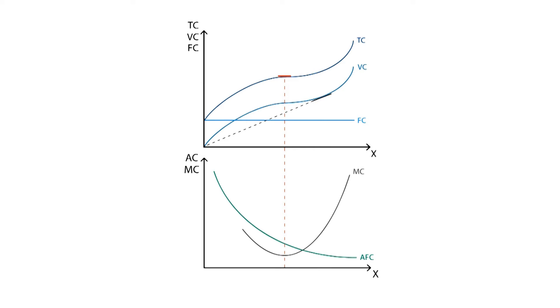The average variable cost curve measures the average cost per unit of output produced. Its minimum point matches the point where the marginal cost curve crosses the average variable cost curve.